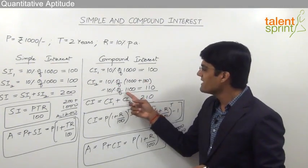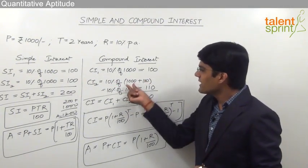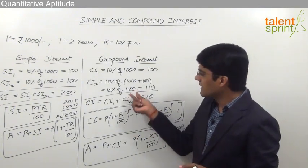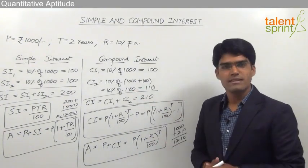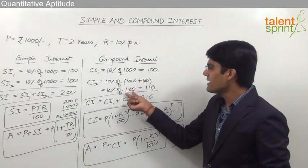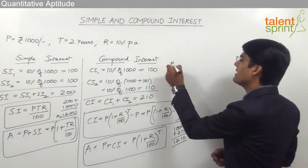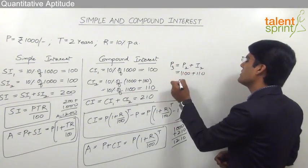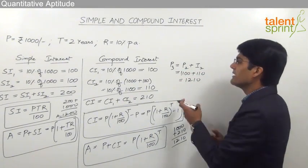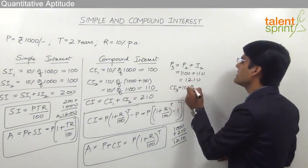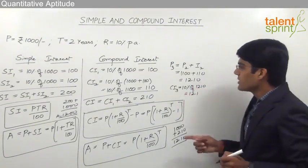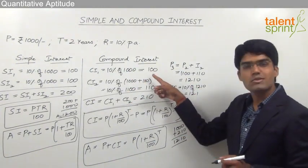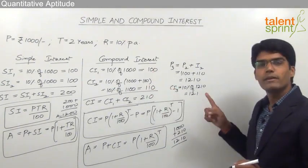In compound interest: first year principal is 1000, second year is 1100, third year is 1210, and so on. The principal for the second year is principal of first year plus interest of first year. For the third year, it is principal of second year (1100) plus interest of second year (110) = 1210 rupees. The compound interest for the third year will be 10% of 1210 = 121 rupees. So the interest also increases: first year 100, second year 110, third year 121, and so on.